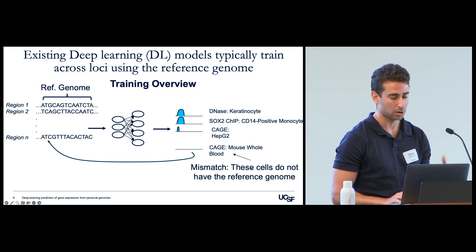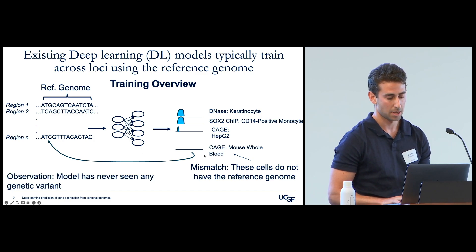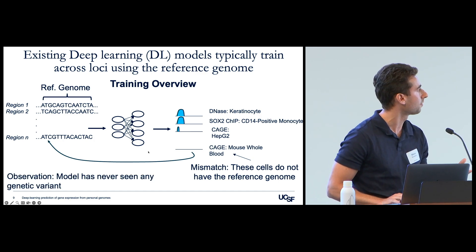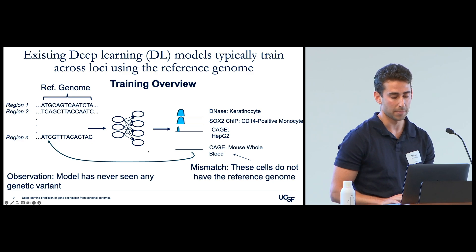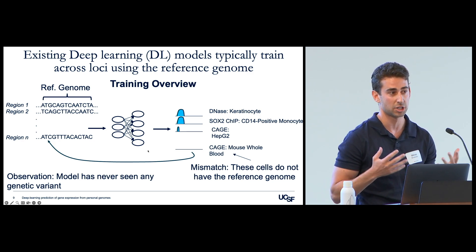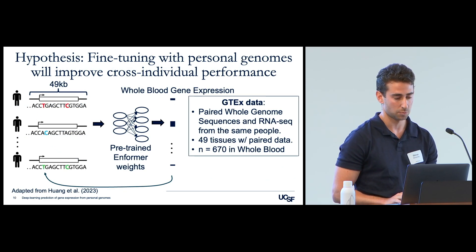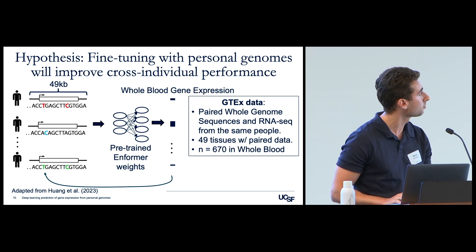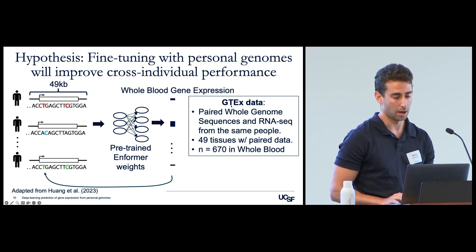In a way, the model is trying to learn a relationship that doesn't completely exist - these cells do not have the reference genome, yet it's trying to learn the relationship between the reference genome and gene expression. But more importantly, such a model will never have had any opportunity to see any genetic variant at any point during training. That might partially explain why they underperform when asked to predict gene expression from sequences containing genetic variants. So we wanted to evaluate whether fine-tuning with personal genomes will improve their ability to predict gene expression from people.